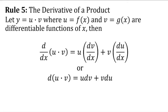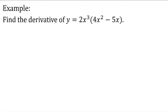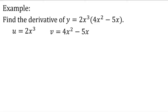Let's have an example. Find the derivative of y equals 2x cubed times 4x squared minus 5x. This is the same as before, but this time we will use the product rule. Let u be 2x cubed, and v be 4x squared minus 5x. So we have u and v here. Now let us get du and dv.